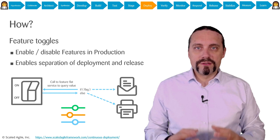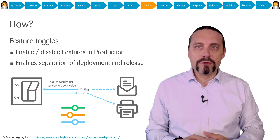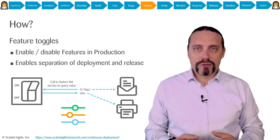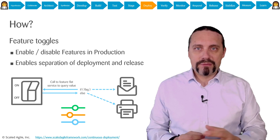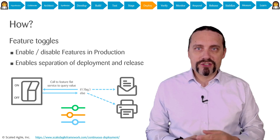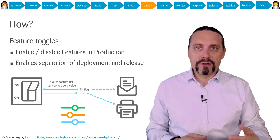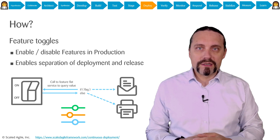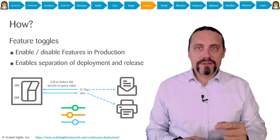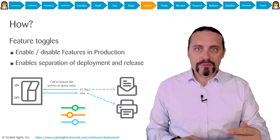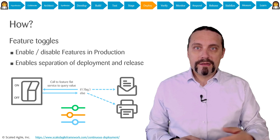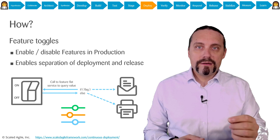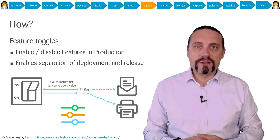Note that the feature toggle must be removed when you have released the feature. A feature toggle is not the same as an application configuration — an application configuration stays for a long time because it configures the application. A feature toggle is only there to enable continuous deployment to production with the feature toggle off, and once released and the toggle switched on, the toggle code is removed.